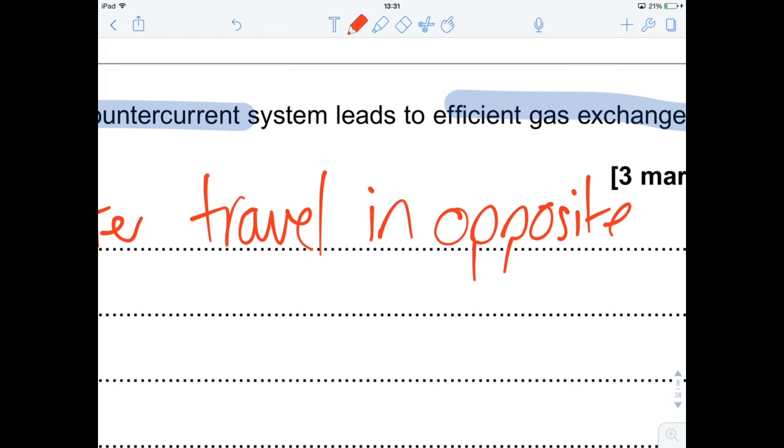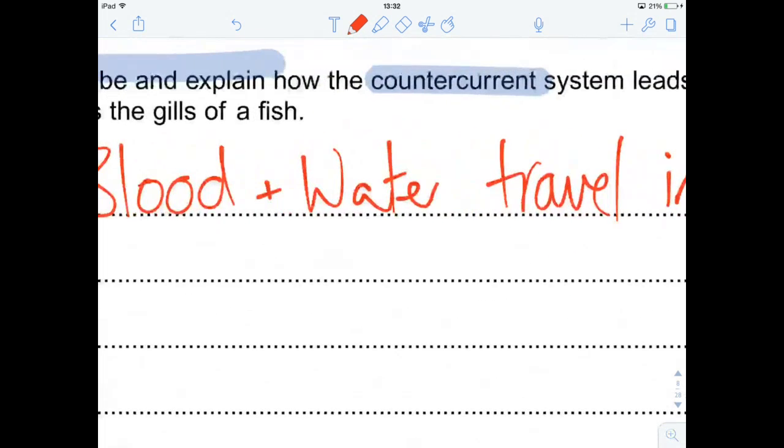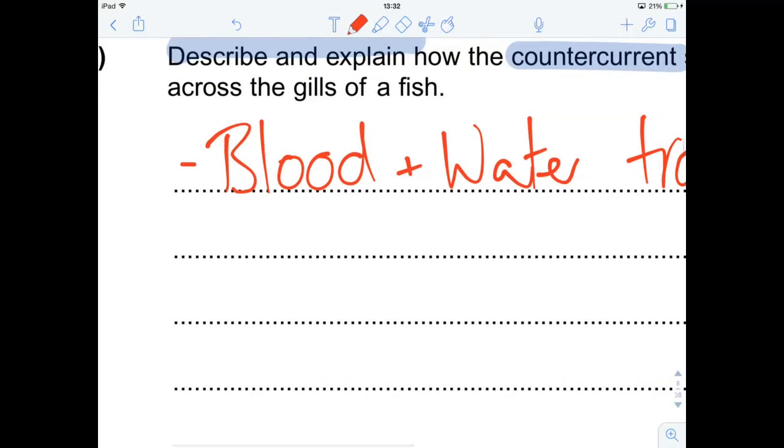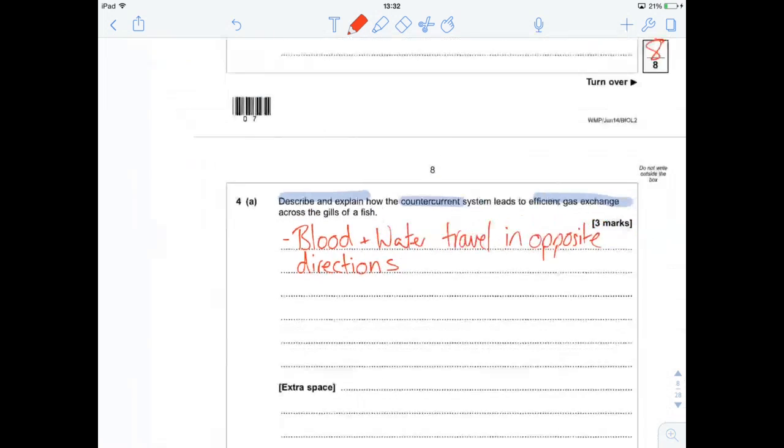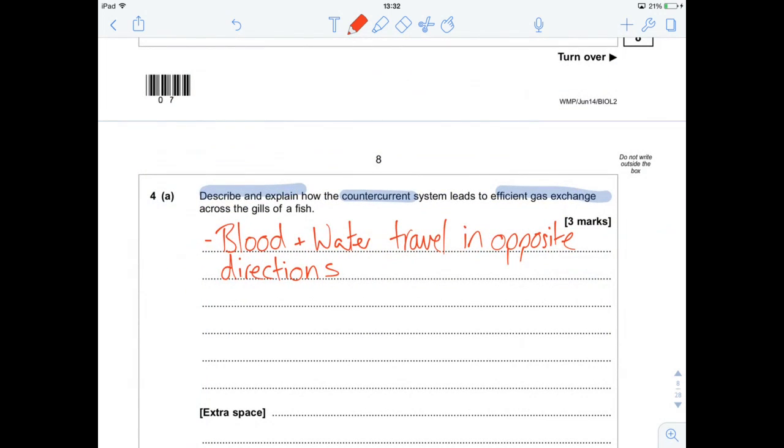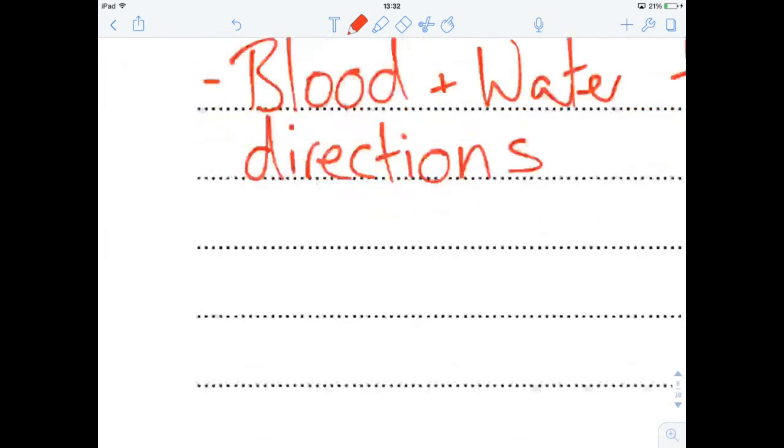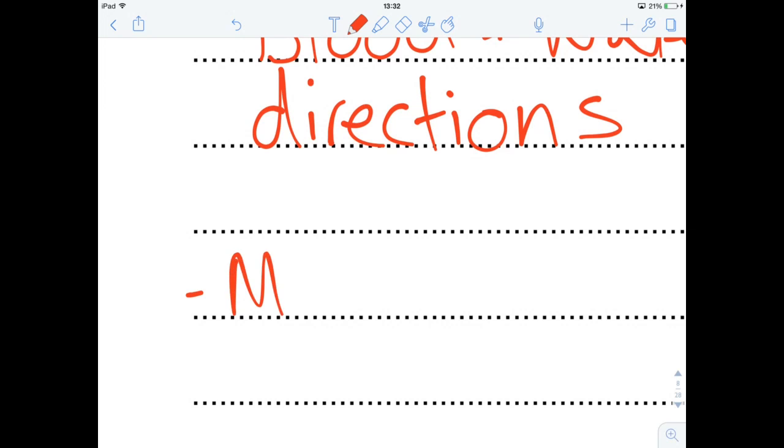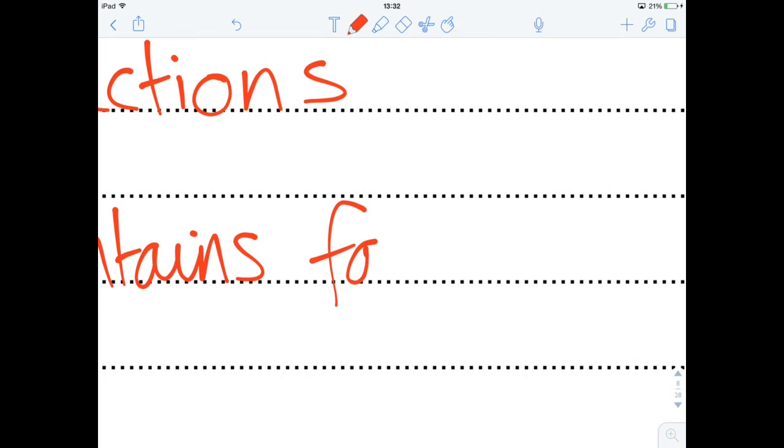And the great thing about this, I'm not going to re-explain the whole thing because you should watch my video, is that the most oxygen-rich water is coming into contact with the most oxygen-rich blood. And the most oxygen-poor water is coming into contact with the most oxygen-poor blood. And basically, this maintains a favourable concentration gradient, which is an examiner's favourite phrase.